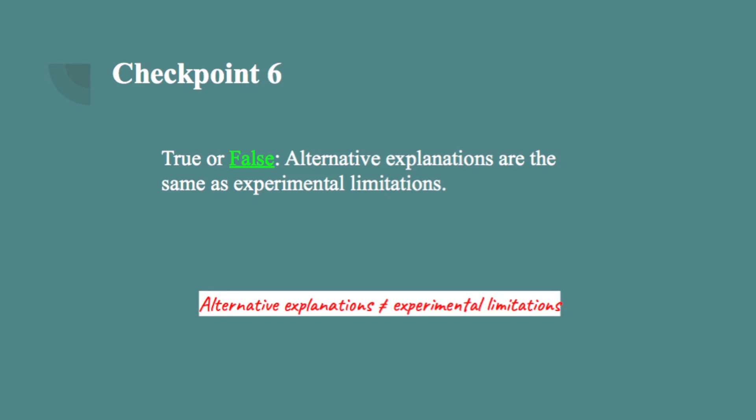Experimental limitations are internal or external factors of the experimental design that may either bias or change an outcome of a particular study. For example, if you use faulty equipment in the first half of your experiment but then a new piece of the same equipment in the second half of your experiment, this change could result in faulty outcomes. Human error in all of its forms is also a very common experimental limitation.